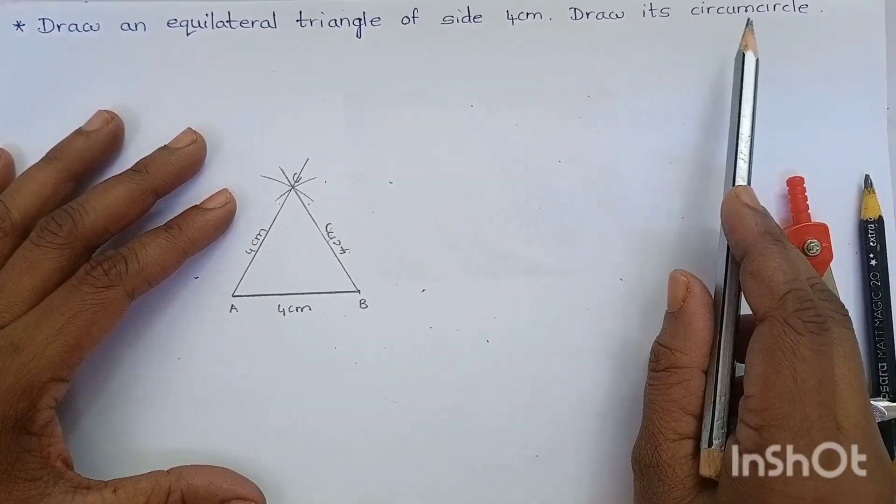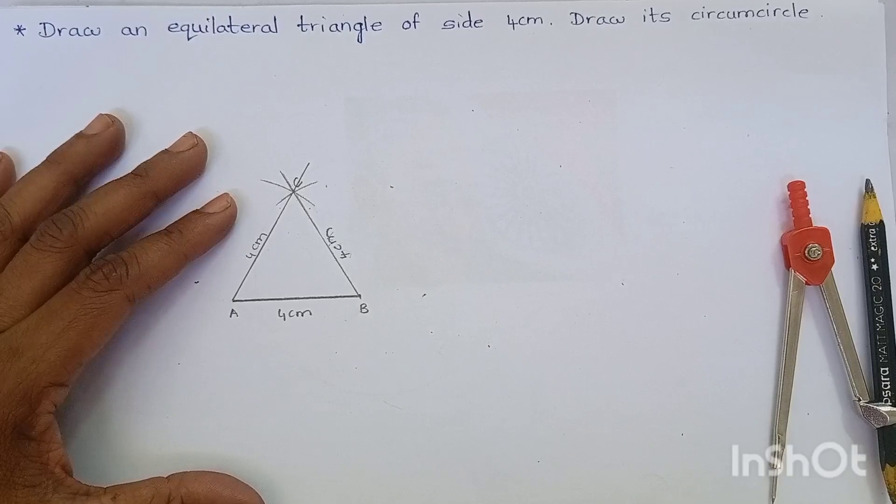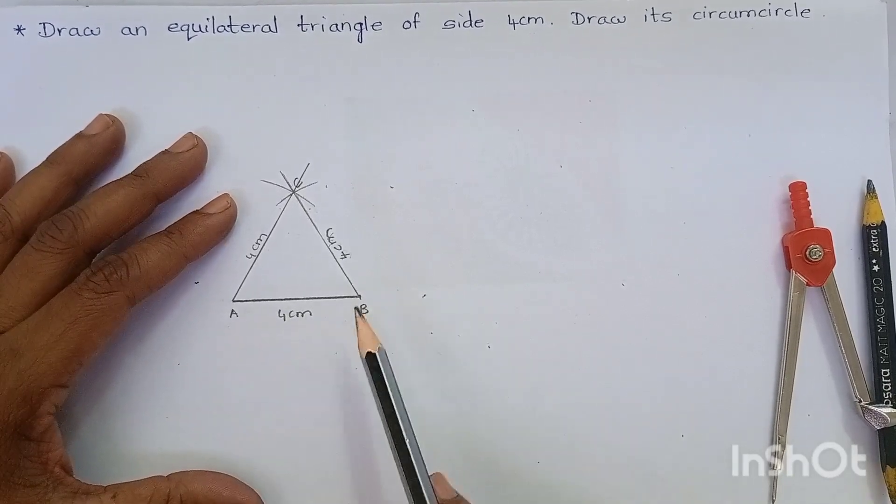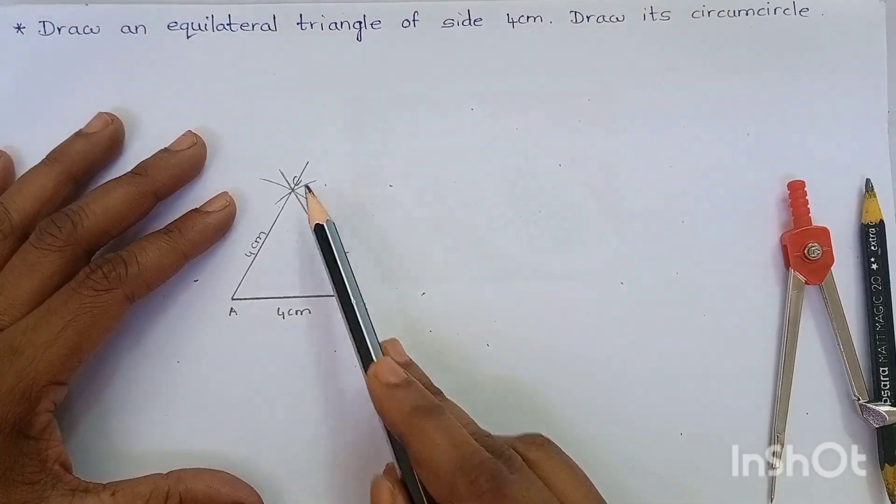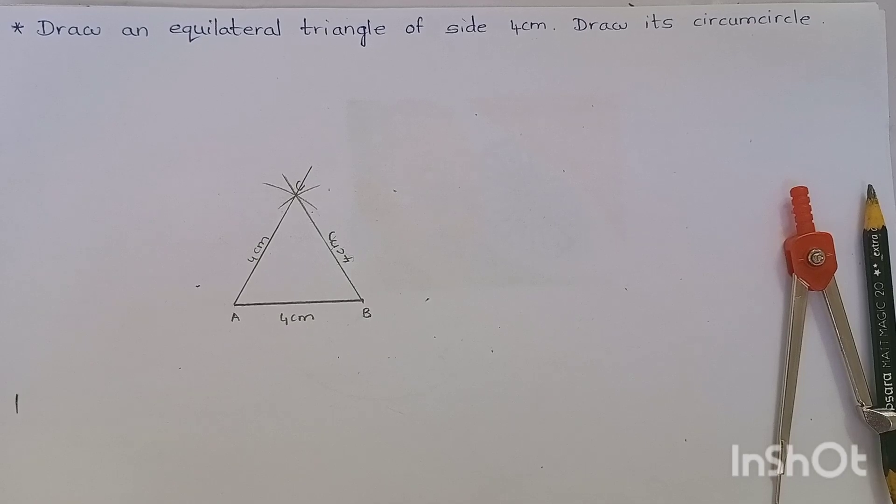Now, draw its circumcircle. To draw a circumcircle, we have to take the perpendicular bisector of AB and BC. Or, you can take the perpendicular bisector of any two sides.